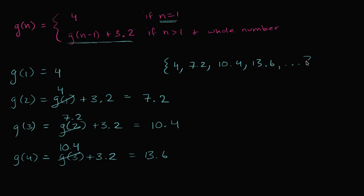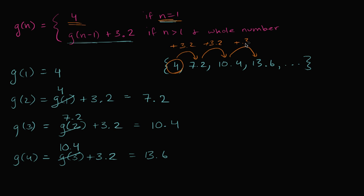What's happening in this sequence? Well, we're starting with four — this base case of the function gave us that. If n is equal to one, the function is going to be equal to four. And then for each term after that, you take the previous term and you add 3.2. So we just keep adding 3.2 to get to the next term.